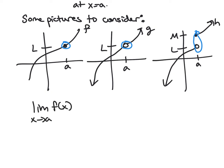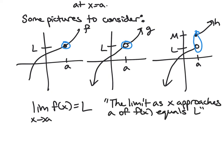Okay, so our notation is as follows. I would write like limit as x approaches a of f of x equals L. So this would be for the leftmost picture here. And what does this really mean?